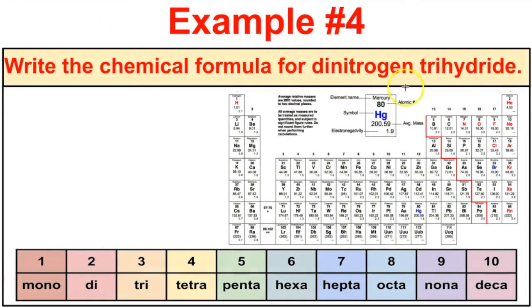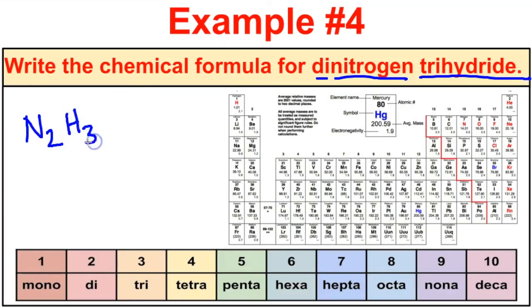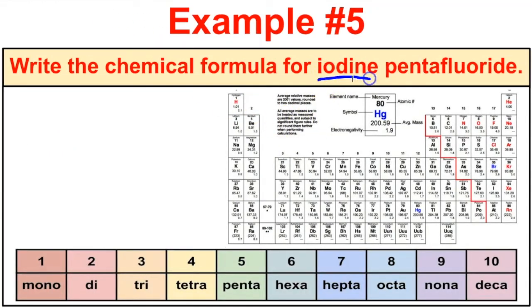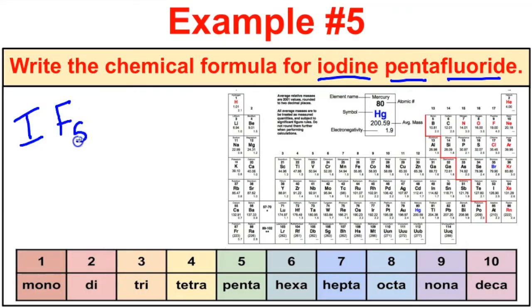Now we're given names and asked to write formulas. Dinitrogen trihydride: dinitrogen means N2, and trihydride means tri is 3 with hydrogen, giving N2H3. Iodine pentafluoride: iodine has no prefix, so there is just 1 — giving I — and pentafluoride means penta is 5 with fluoride (F), giving IF5.